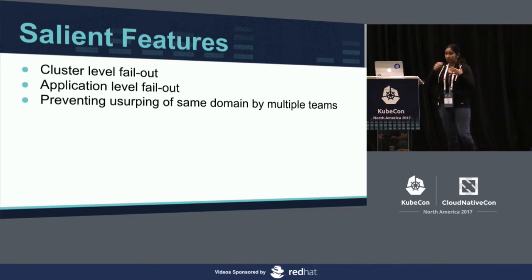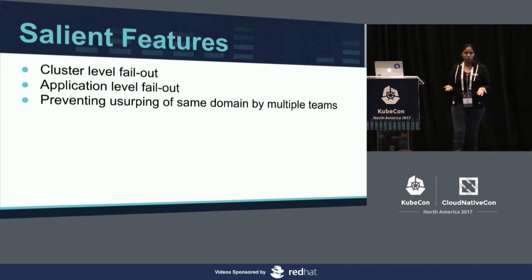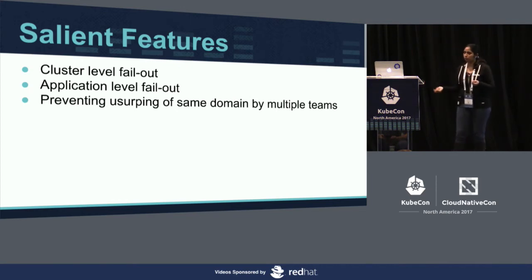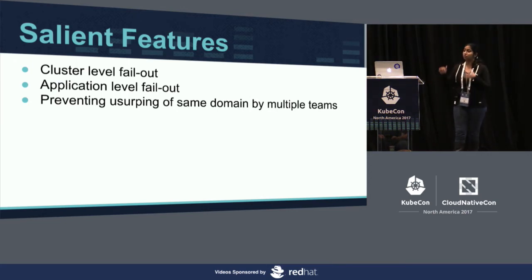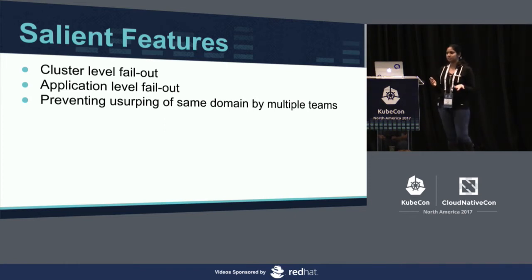Similar to cluster-level failout, we also provide application-level failout. If an application wants to fail out all traffic from a particular region, they can specify an application-level config map. The service watcher picks this up, sends it through the Ingress controller flow, and Apache Traffic Server starts serving a 404 for the health check for that specific application. All other applications on the cluster remain untouched and unaffected, while that application's traffic gets diverted to other regions.